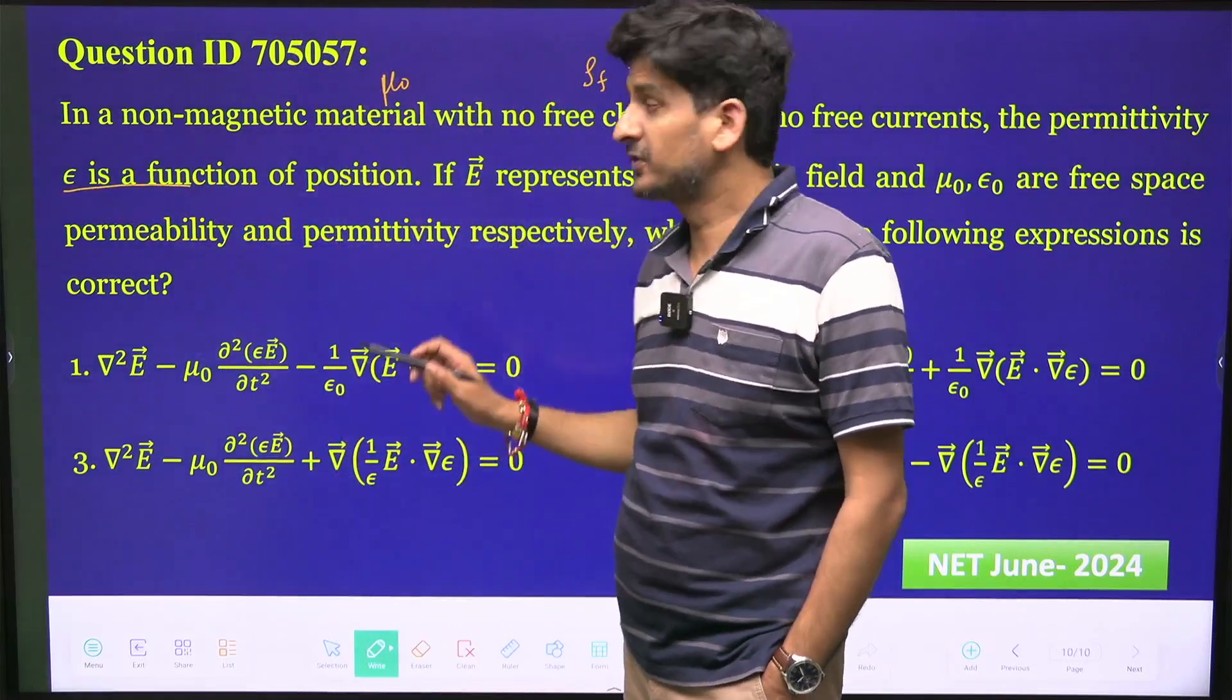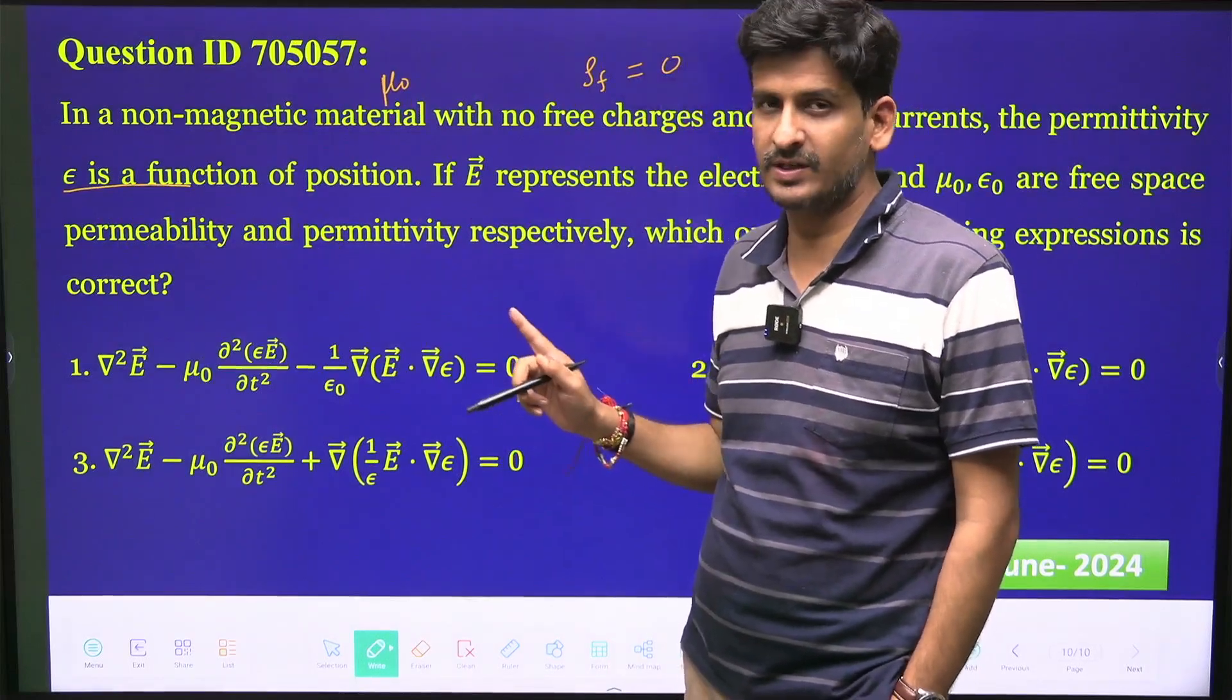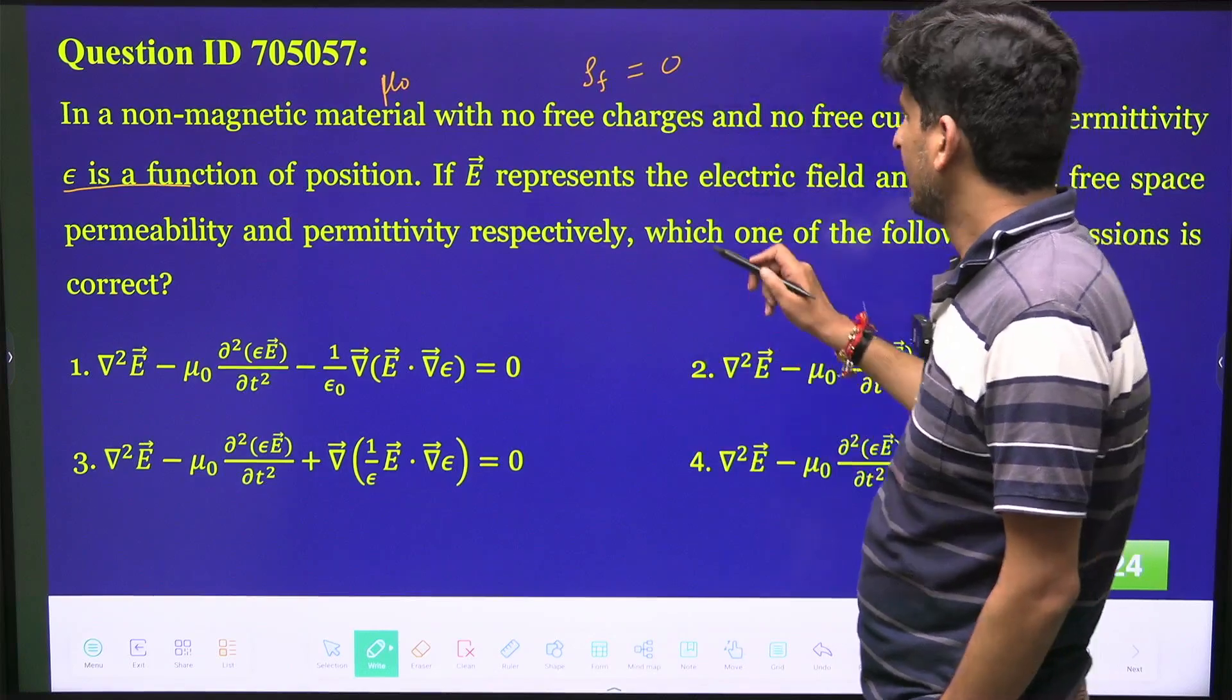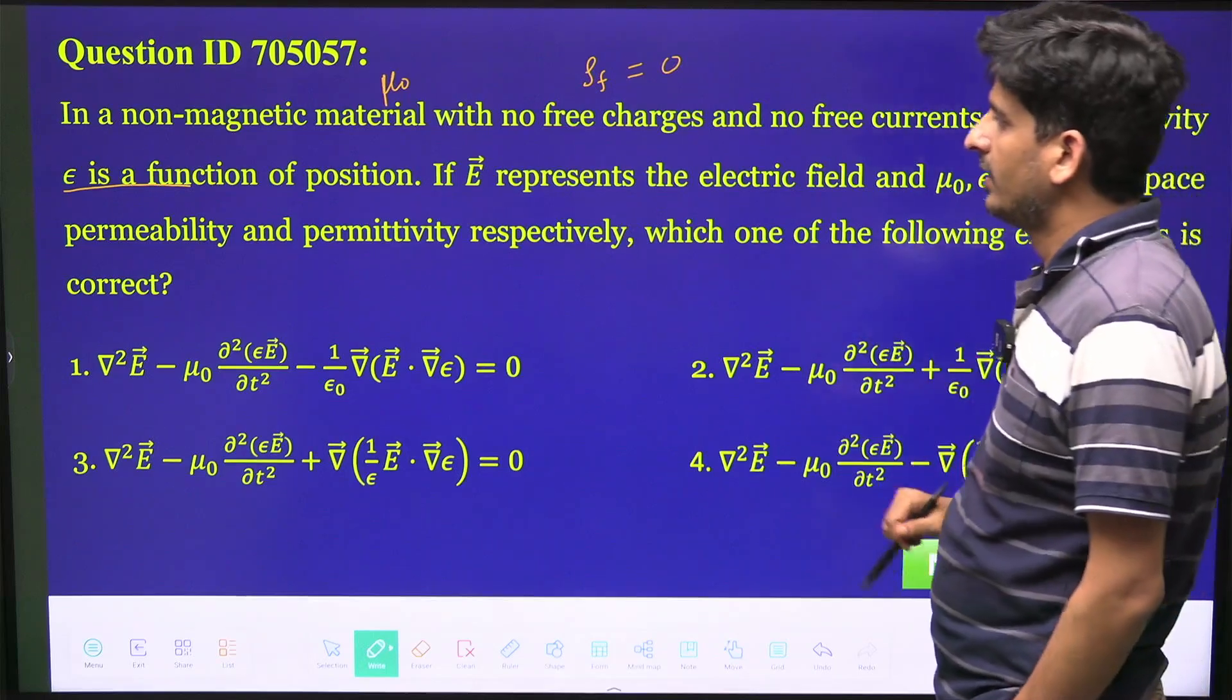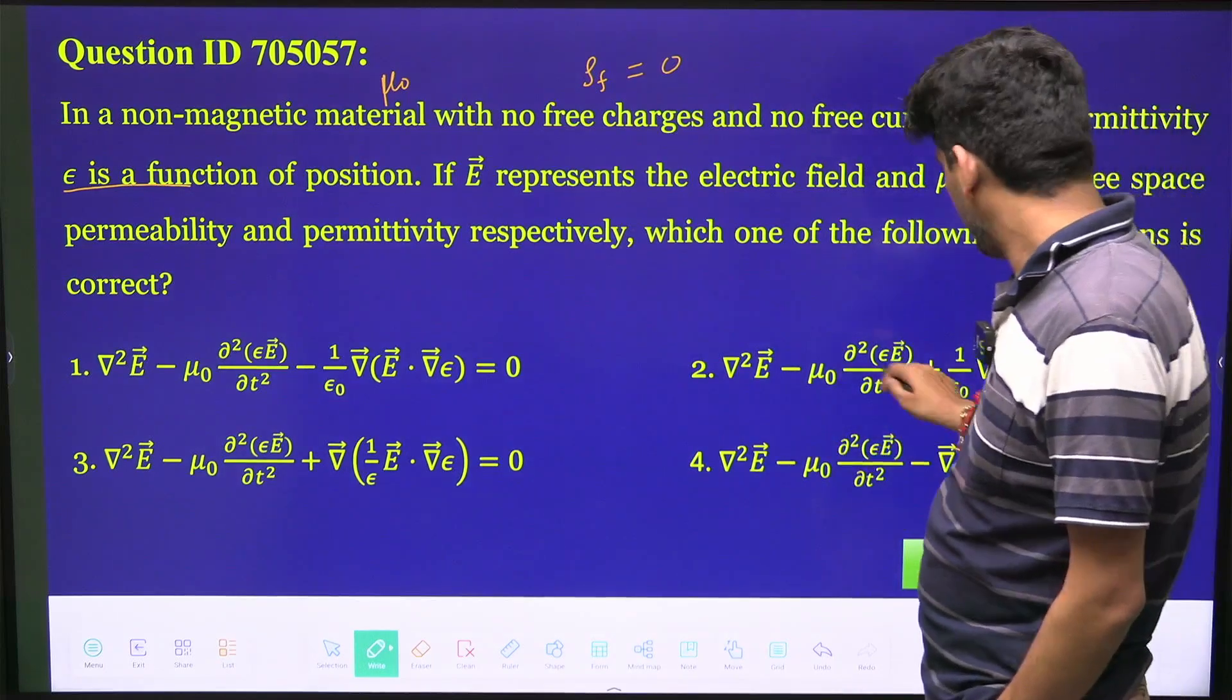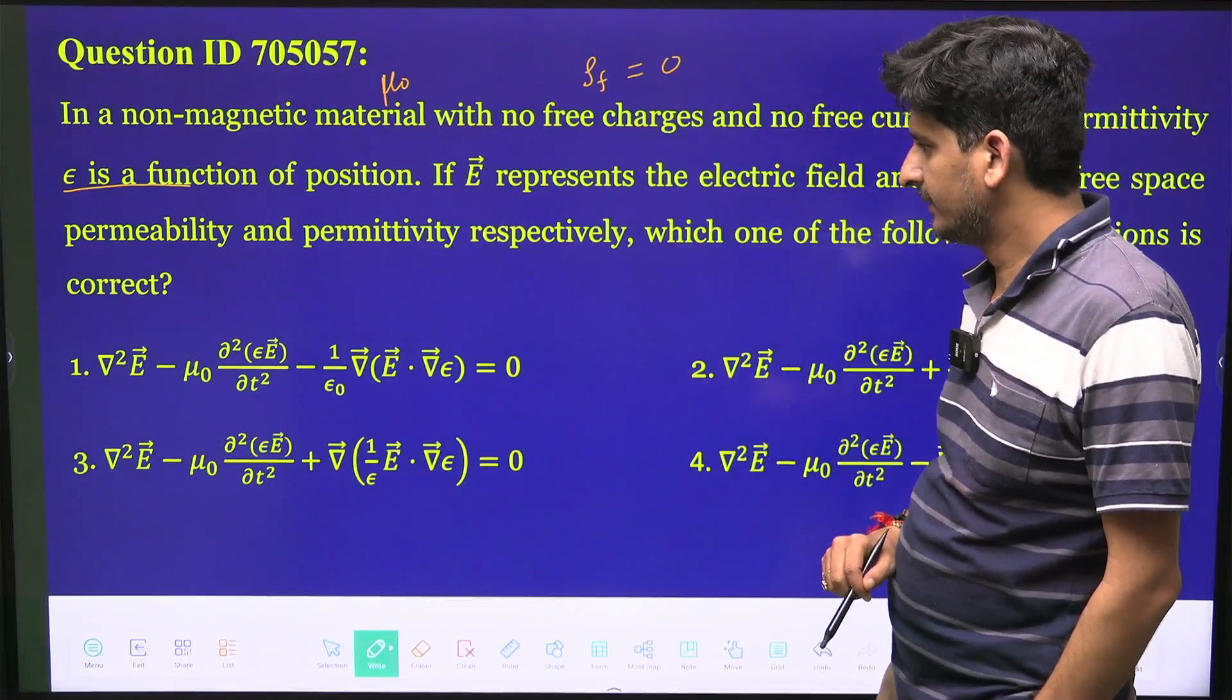The permittivity is ε and it is a function of position, so we will not take it as constant, especially when the del operator is there. E is the electric field, μ₀ε₀ are permeability and permittivity. Which of the following expressions is correct?